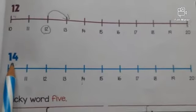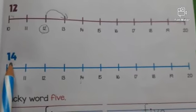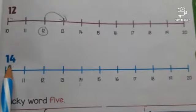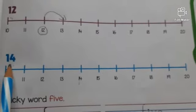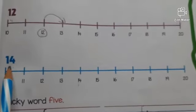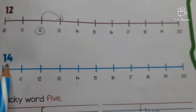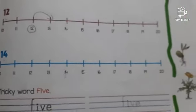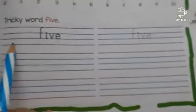Children, look at here. Which number is it? Yes, you are right. It is number 14. Now, what will you do? Yes, it is your time. You will do it yourself. Now, look at downside. It is written, tricky word 5.